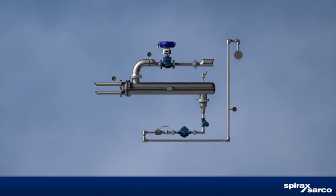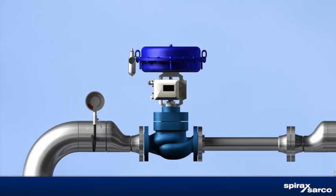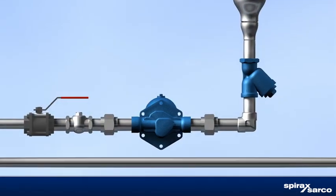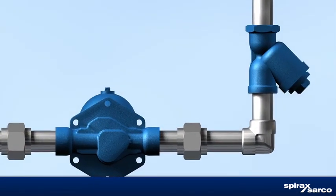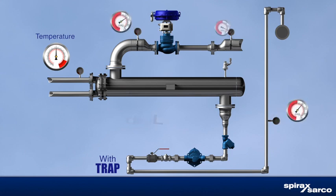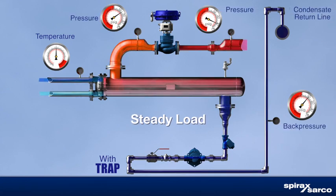The most common process heating heat exchanger hookup involves a temperature control valve on the steam line to the heat exchanger and a steam trap on the condensate line from the heat exchanger. The shell side is a steam space. A control sensor signal at the tube side outlet is used to throttle the steam control valve to maintain set point temperature. Higher pressure in the steam space than in the condensate recovery line produces effective condensate removal and lift to the return system.